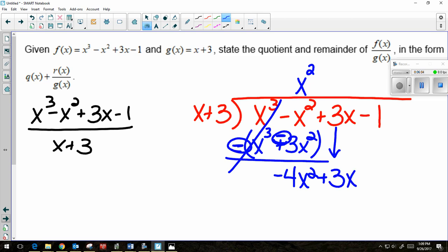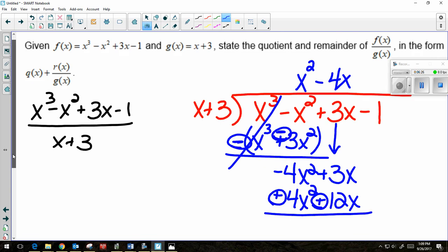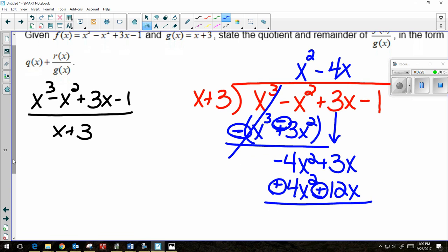What times x gives me -4x²? -4x. I have a top piece, so now I multiply. -4x times x is -4x². -4x times 3 is -12x. And I'm subtracting, which means I change all of my signs. And I like to circle them so I know I've already done it. So I have -4x² + 4x². That cancels. That's always your goal. And then I have 3x + 12x, which is 15x. And now I bring down my -1.